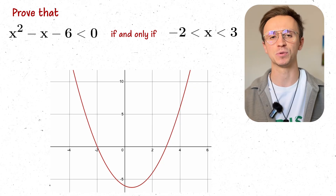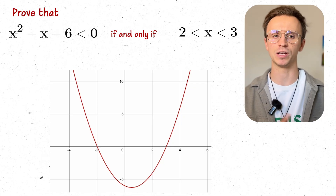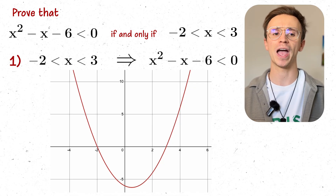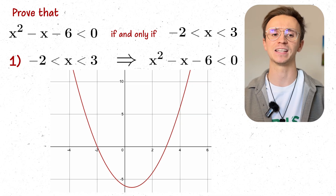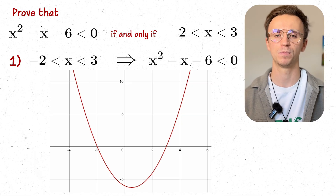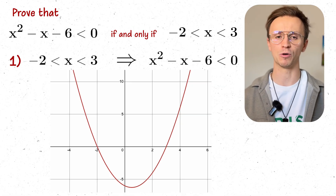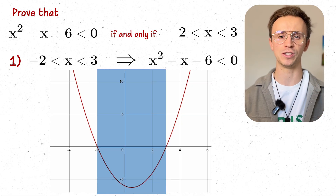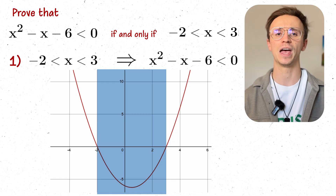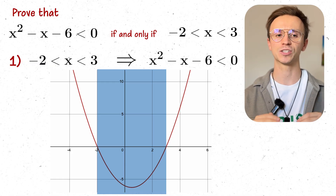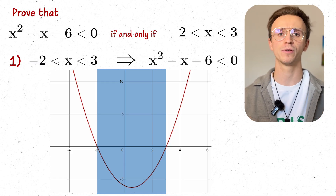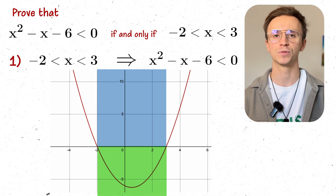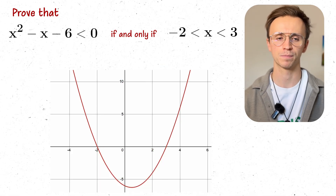Let's assume that x is between minus two and three, then we need to show that x² - x - 6 is less than zero. Looking at our graph, if x is between these two regions, then x² - x - 6 is definitely less than zero. So that's the first direction proved.